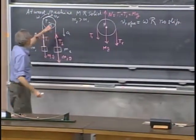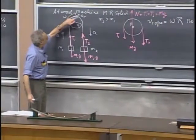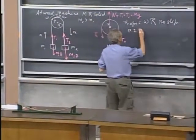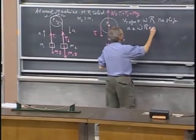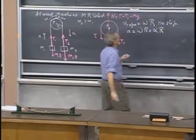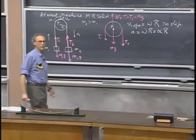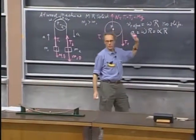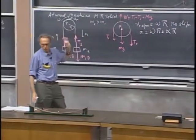So the acceleration, which is the derivative of that velocity of the rope, a is omega dot times r, which is alpha times r. Omega is the angular velocity and alpha is the angular acceleration. This is the important condition for no slip.